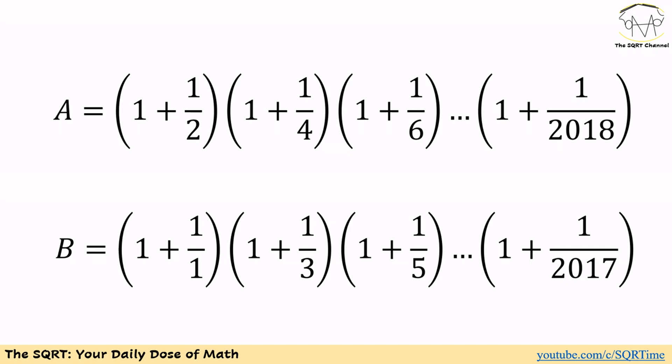As you can see, the expression is missing some terms — we don't have 1 over 1, 1 over 3, 1 over 5, and so on. So I'm going to construct a new expression, call it B, that has those missing terms. For B we have: 1 plus 1 over 1, times 1 plus 1 over 3, times 1 plus 1 over 5, and so on.